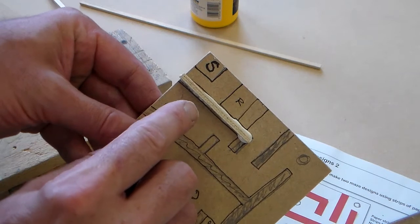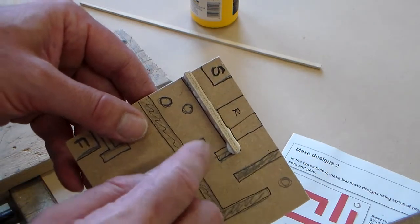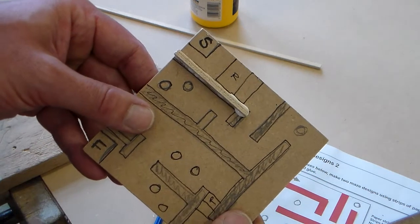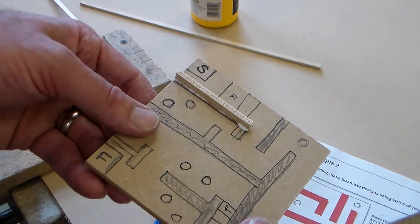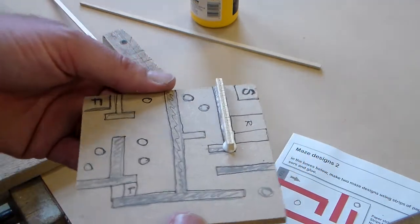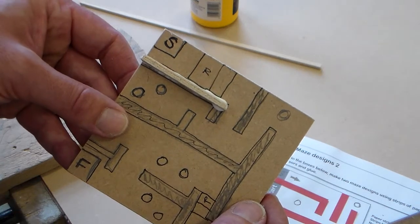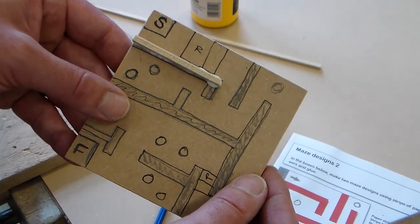Now we have to make sure that we don't knock that so as we build up our strips, as we build up our ramps onto our maze, we just have to be very careful that we don't knock these. We can build this up carefully strip by strip and then leave this to dry for next lesson.